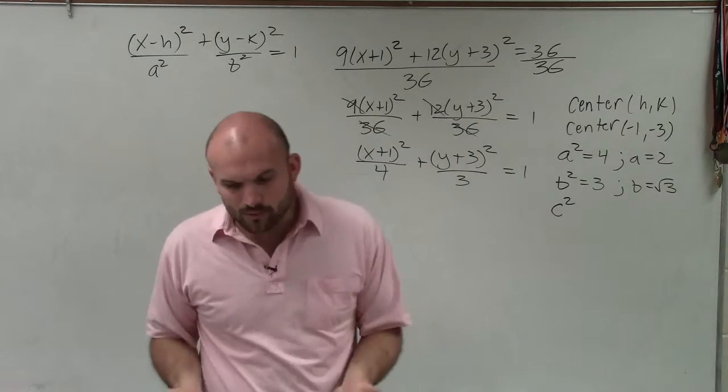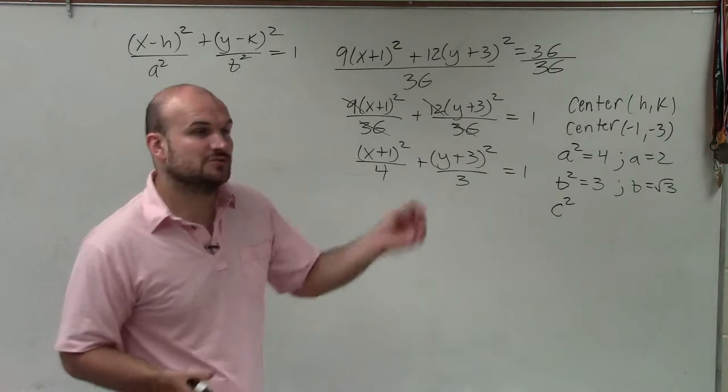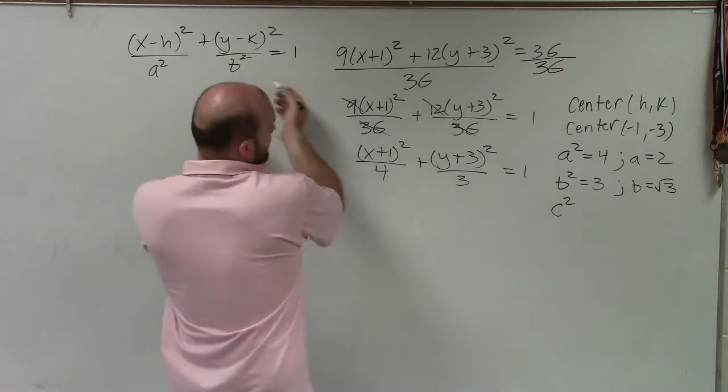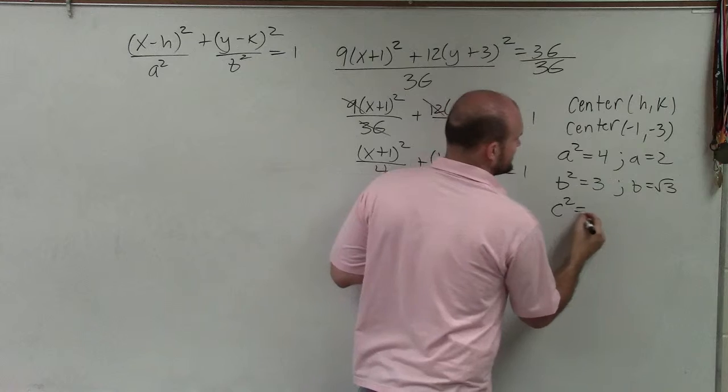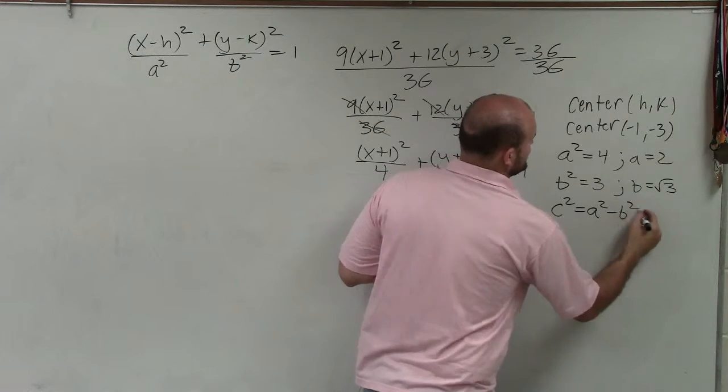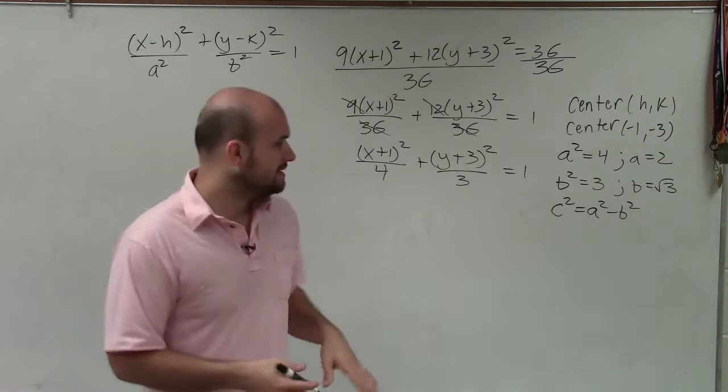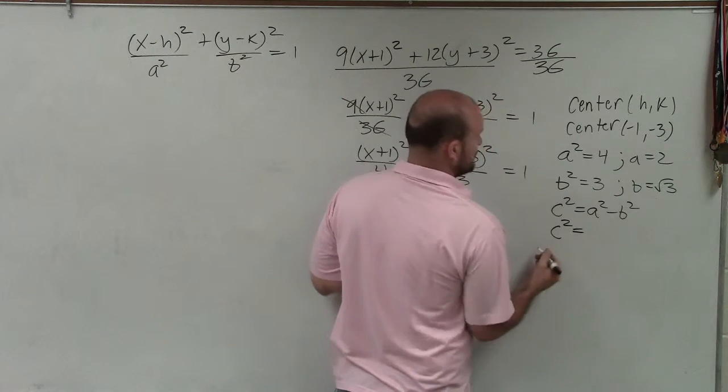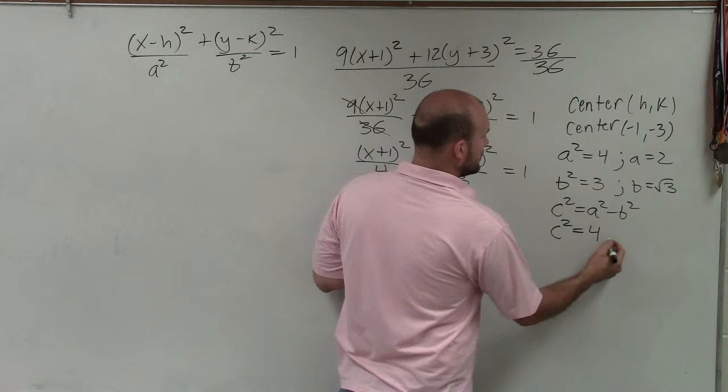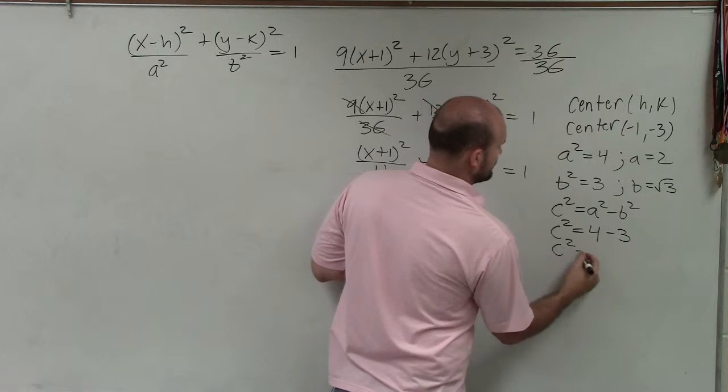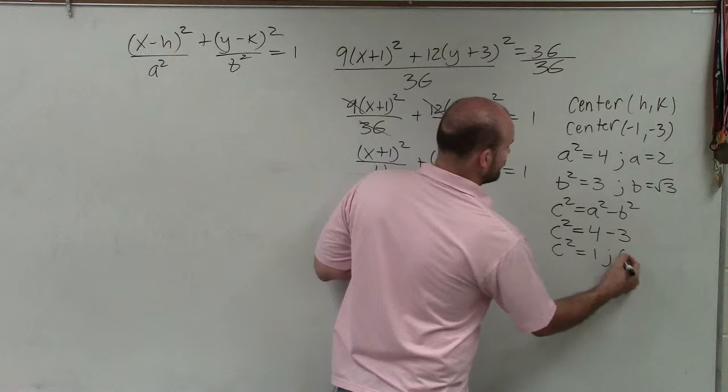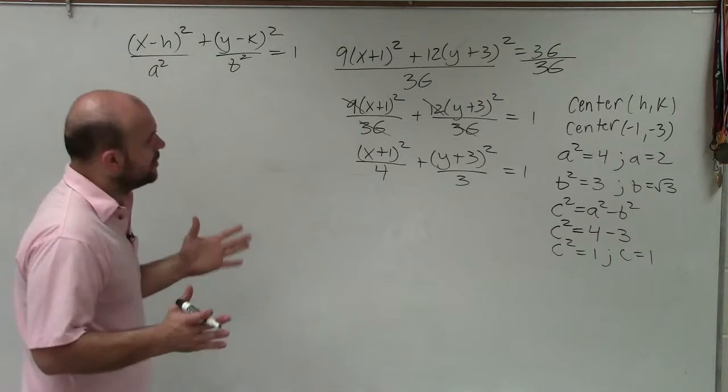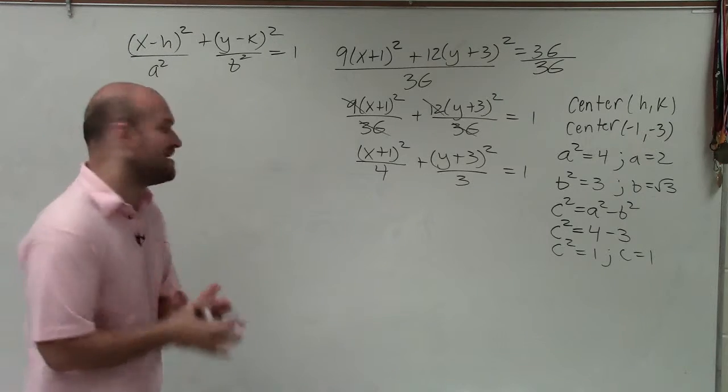And the last thing we're going to need to know is what c² is. Now, c represents the distance from the center to your foci. However, we don't have anything for c² in our equation. But we do have a relationship that says c² = a² - b². And that relationship works for all ellipses. So since I know what a² and b² is, I can say c² = 4 - 3. So c² = 1. Therefore, c = 1. OK, so I think we got enough information. Let's start graphing.